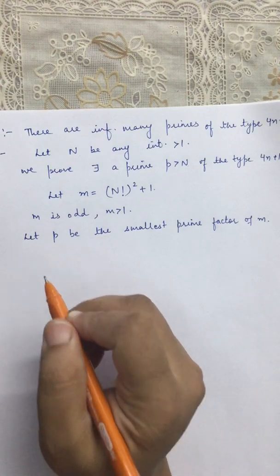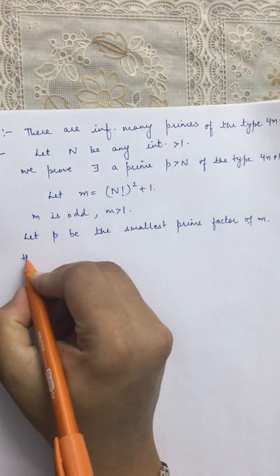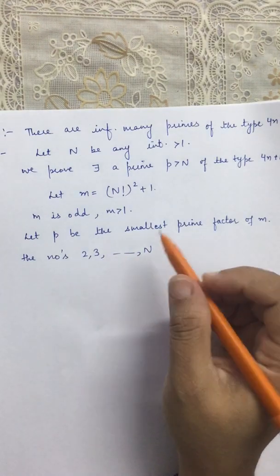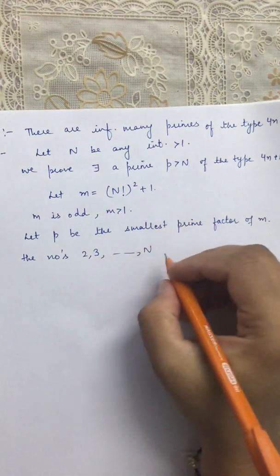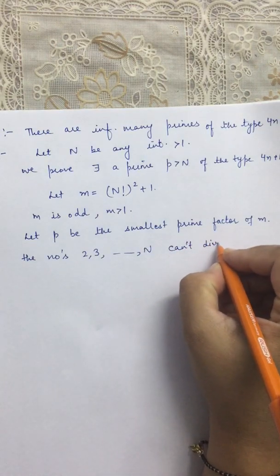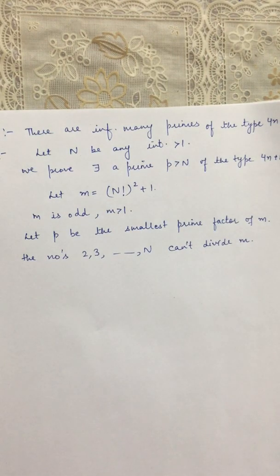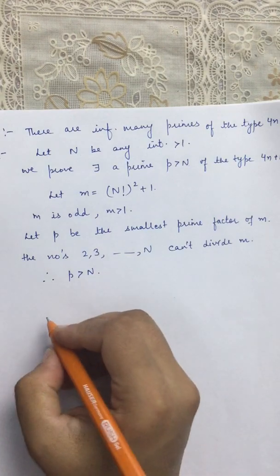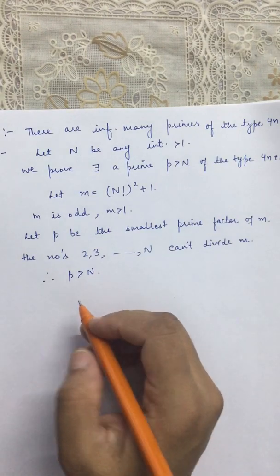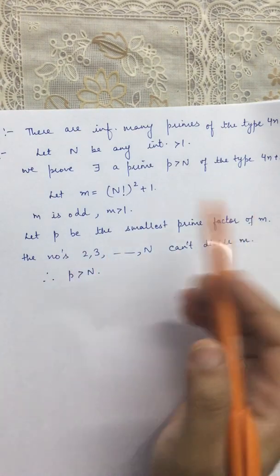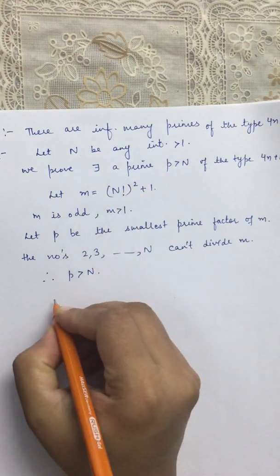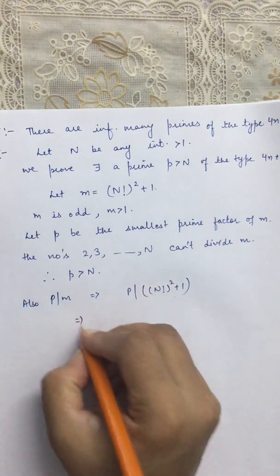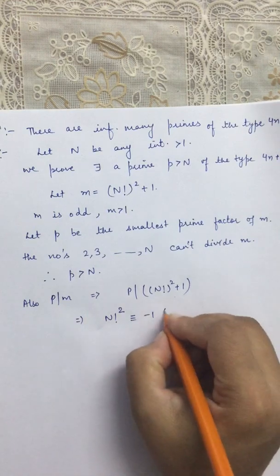Any number between 2, 3, …, n cannot divide m, because if such a number divided m it would also divide n! and would then have to divide 1, which is impossible. So numbers 2, 3, …, n cannot divide m. Since p is the smallest prime factor of m and none of 2, 3, …, n divide m, it follows that p > n. Since p divides m, p divides (n!)² + 1, which means (n!)² ≡ −1 (mod p).